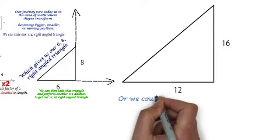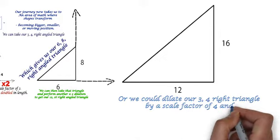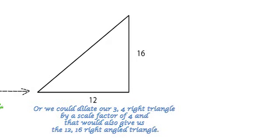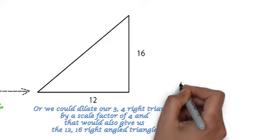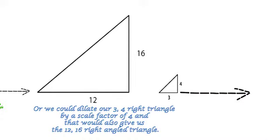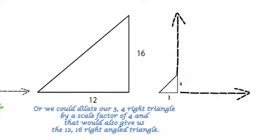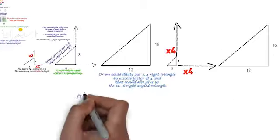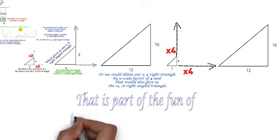Or we could have dilated our three, four right triangle by a scale factor of four, and that would also give us the twelve, sixteen right-angled triangle. We'll show you that. That's part of the fun of transformational geometry.